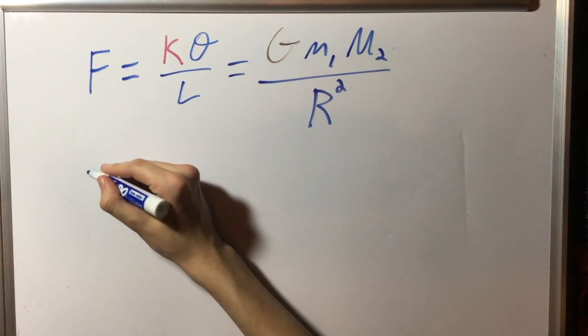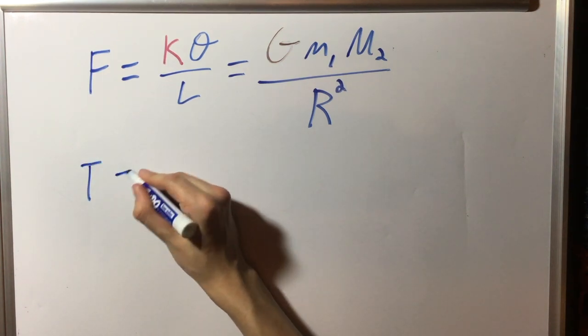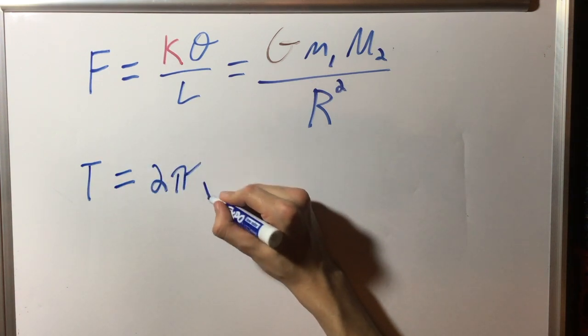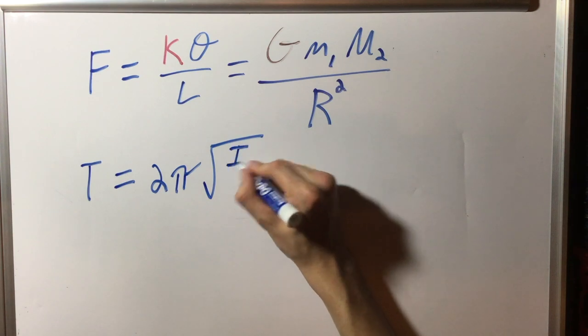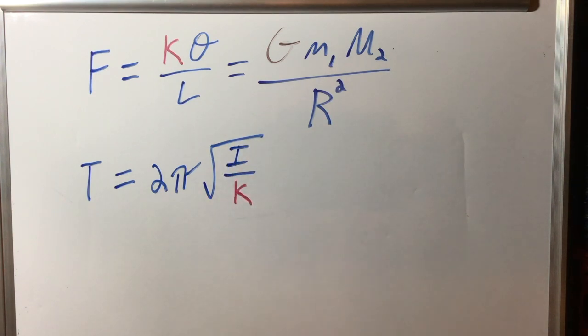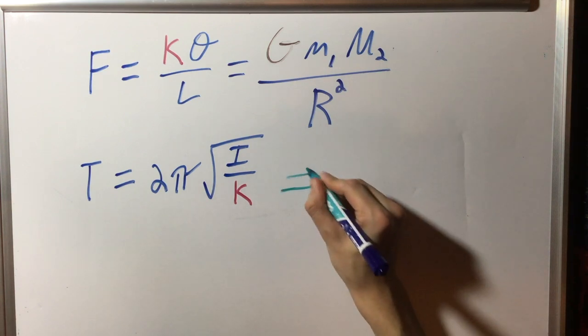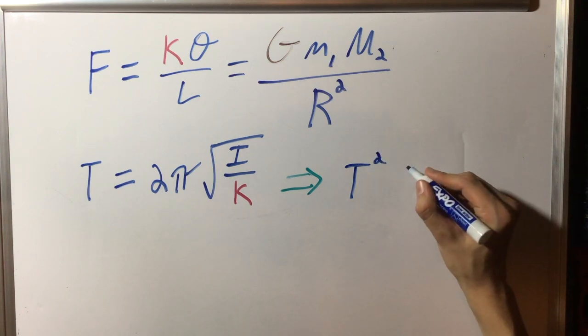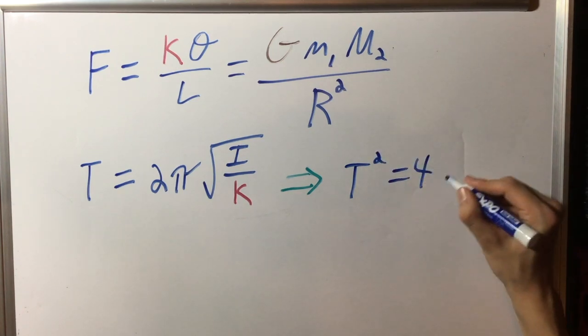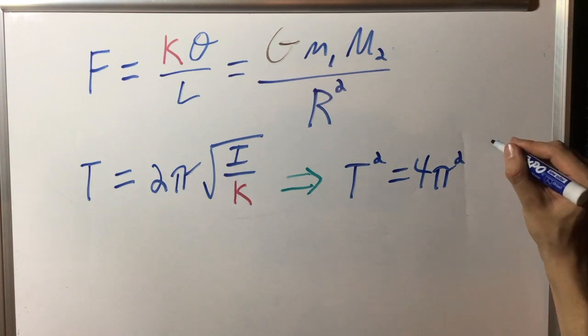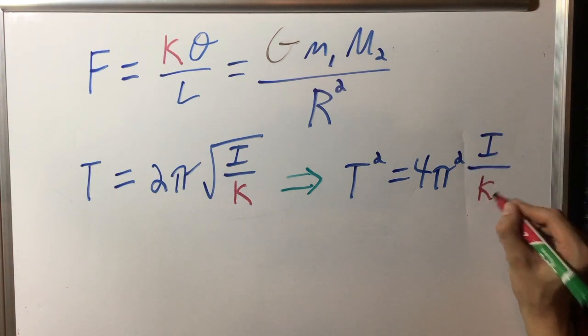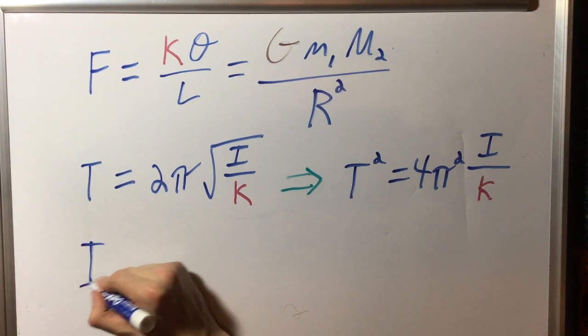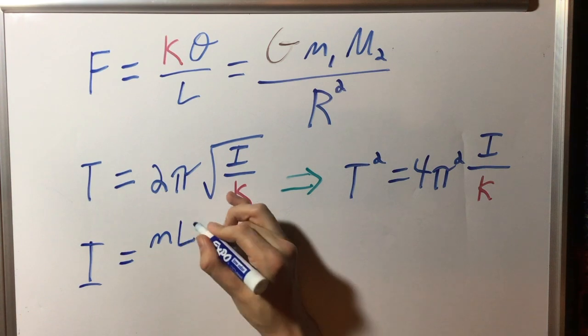To find kappa, we first use the oscillation equation T is equal to 2 pi times the square root of the quantity I over kappa, where T is the oscillation period, and I is the moment of inertia of the torsion bar. For simplicity's sake, we can square both sides of the equation to get T squared is equal to 4 pi squared times the quantity I over kappa. The moment of inertia, I, can be defined as I is equal to M2L squared over 2, where M2 is the mass of the smaller weight, and L is the length of the torsion bar.